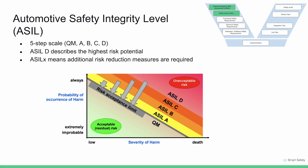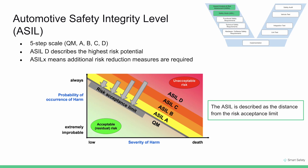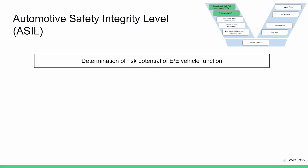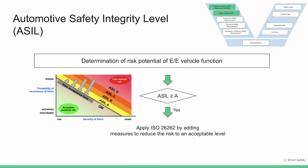The safety mechanisms include different levels of testing. The ASIL is described as the distance from the risk acceptance limit, and safety measures are added to bring the risk level down. Once you have gone through hazard analysis and risk assessment and identified an ASIL for a particular hazard, if the ASIL is A, B, C, or D, we apply safety measures — in other words, apply the ISO standard — to reduce the risk to an acceptable level. If it's QM, the standard does not apply, meaning the hazard is already within the risk acceptable limit.